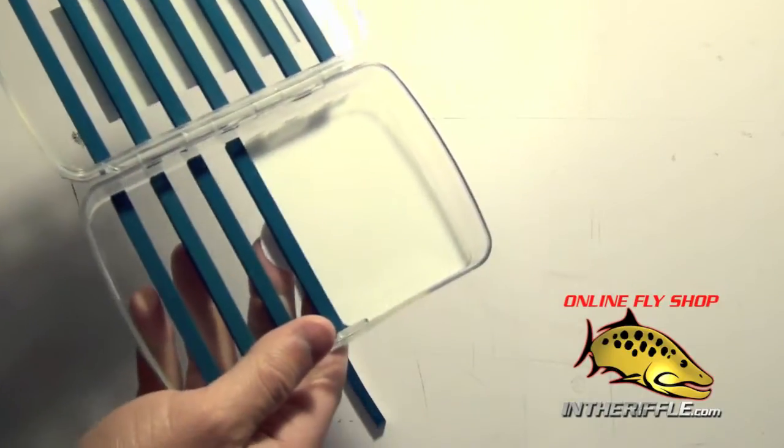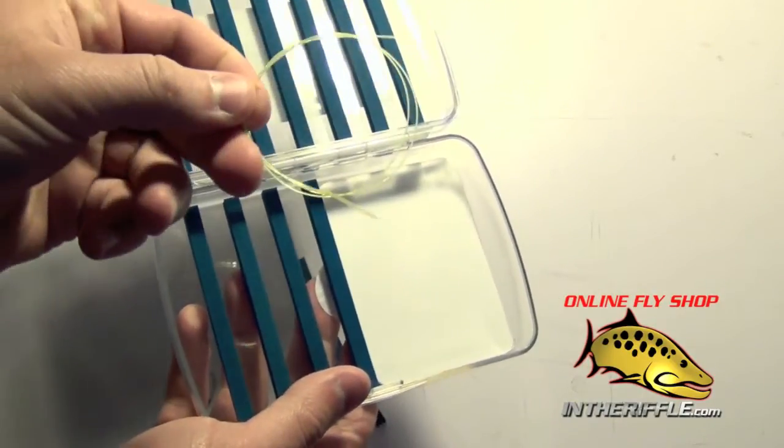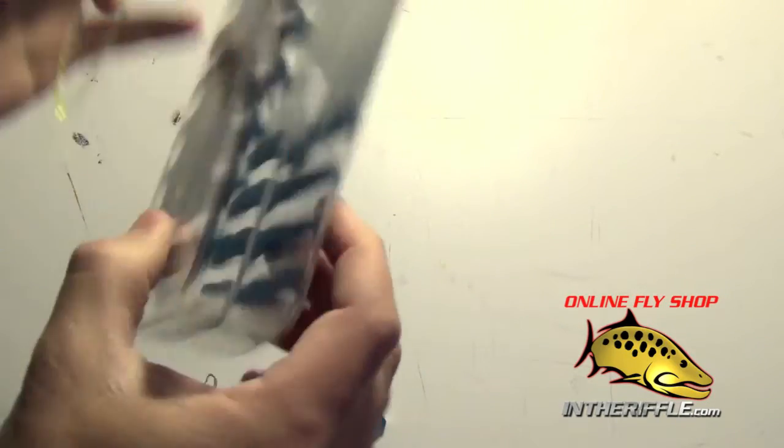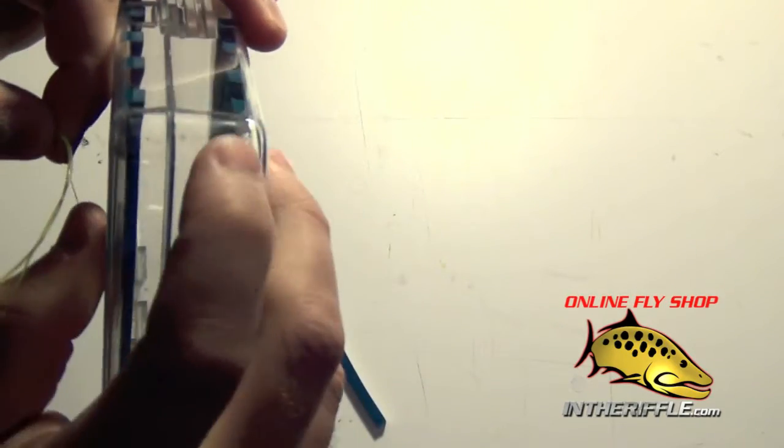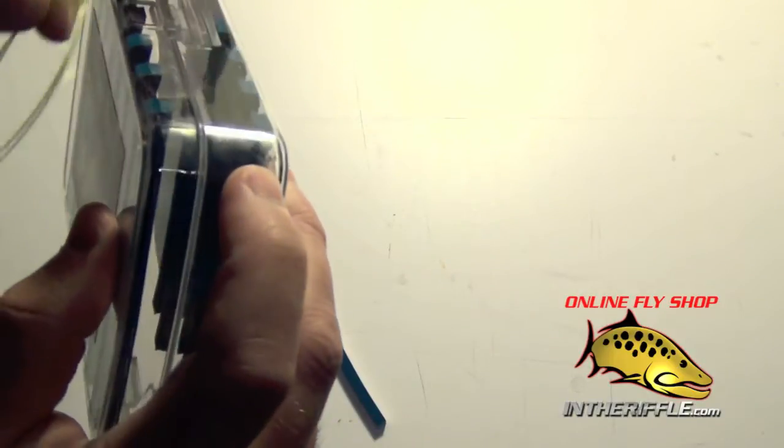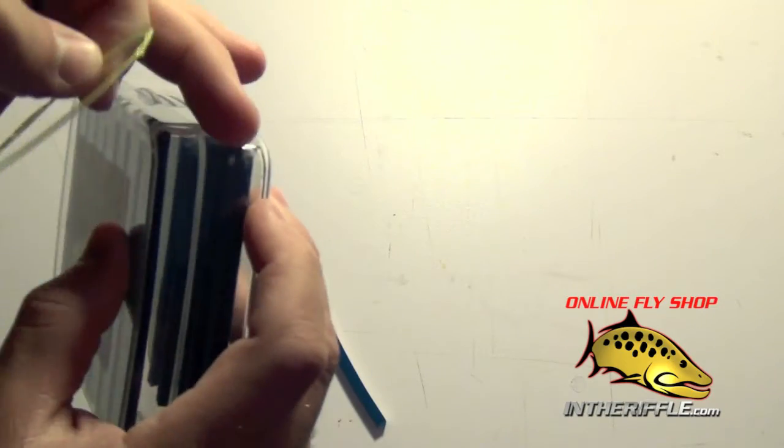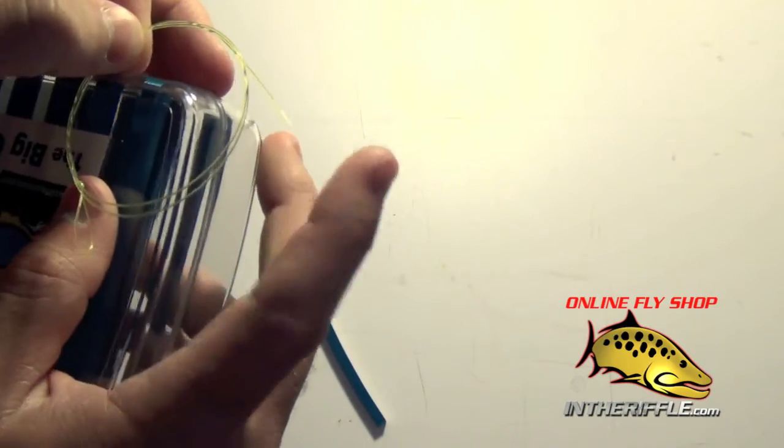Another item it comes with is a piece of monofilament. This box has a hole drilled on the corner right there. You can thread this monofilament through that hole - this little knot here will act as a stopper - then you can tie this to the inside of your vest or use it as a tether.